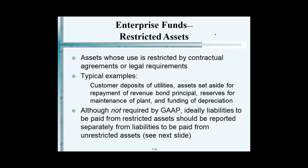When appearing before a utility regulatory board, they ask: what does it cost to provide this service? You say a dollar a unit. They say, prove it. Once proof is given, they ask: what's your rate of return? There's a rate of return given — 6%, 7%, 8% — and your rate is fixed at $1.07 or $1.08. That's how rate regulation works.